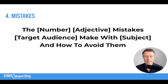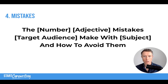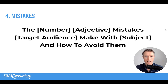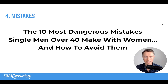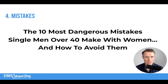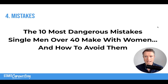Number four is the mistakes headline writing template: 'The [number] [adjective] mistakes [target audience] make with [subject] and how to avoid them.' It can be really powerful. Here's a fun example for the men's dating niche: 'The 10 most dangerous mistakes single men over 40 make with women and how to avoid them.' Notice the use of the word 'dangerous' — that creates intrigue by adding emotion. 'Mistakes' is obviously something we all want to avoid, and it's very specific about who it's talking to: single men over 40.